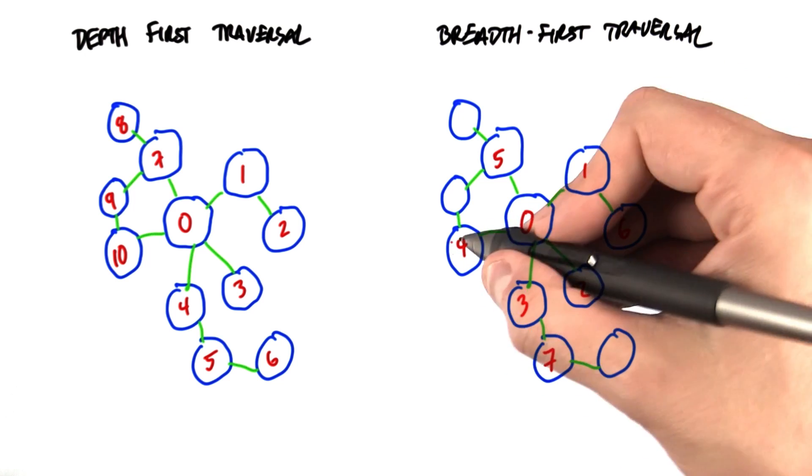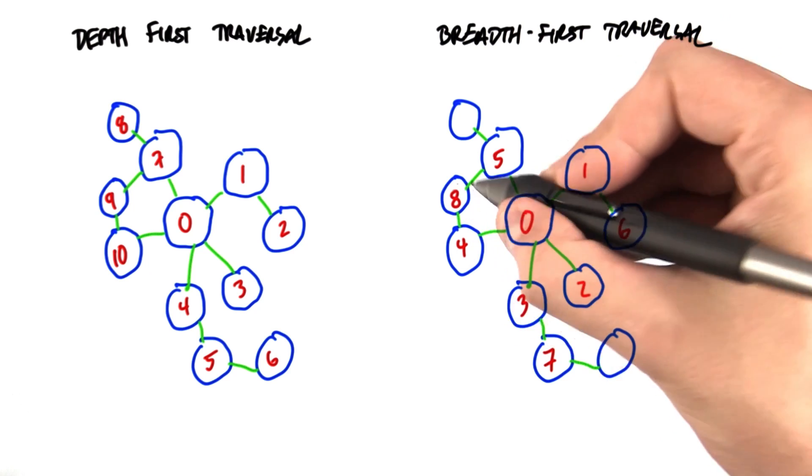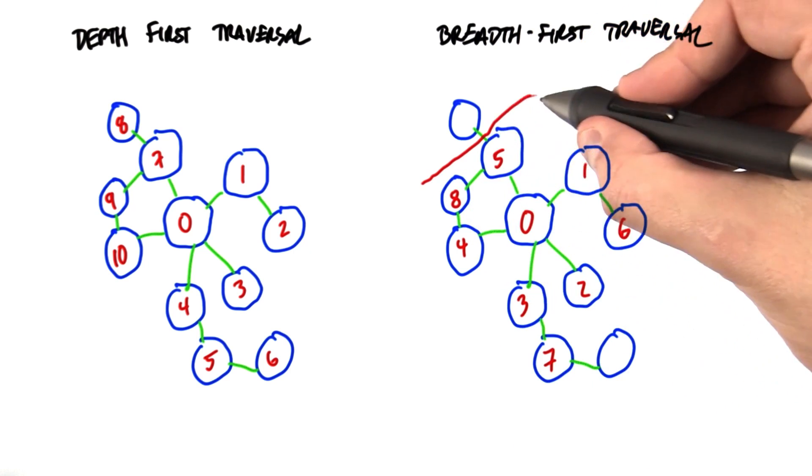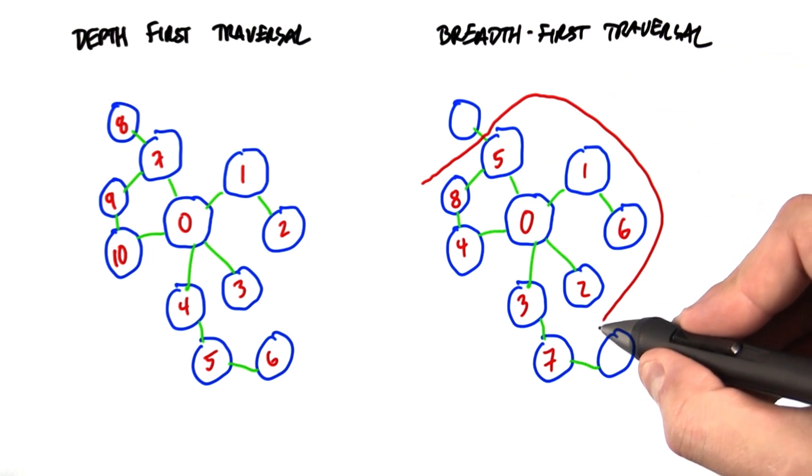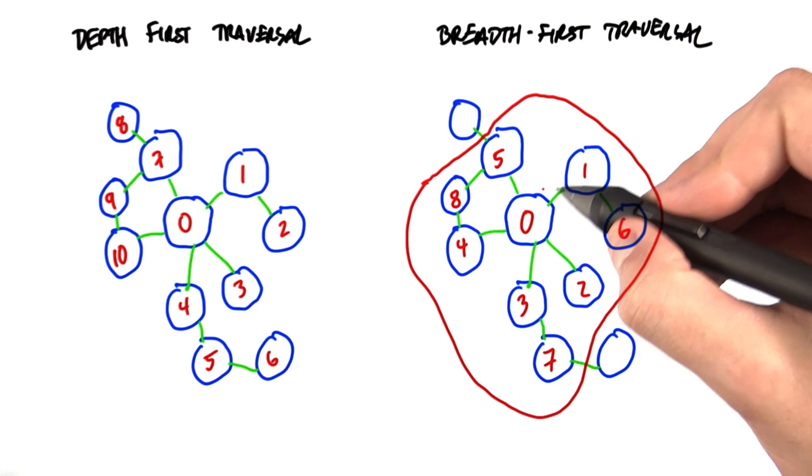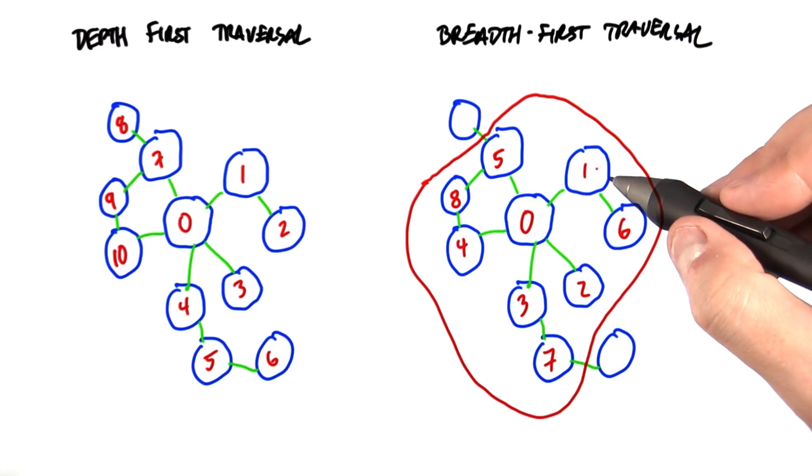Now we go to number 4. What are the ones that are one hop away from number 4? Okay, now we're at 8 and so on. One thing you can notice here is that we have a structure that we call a frontier that forms the boundary between all the nodes that we've already visited and all the nodes that we haven't visited.